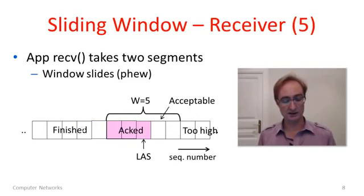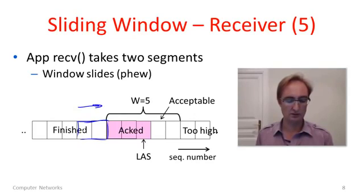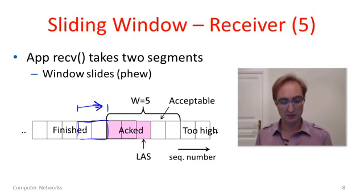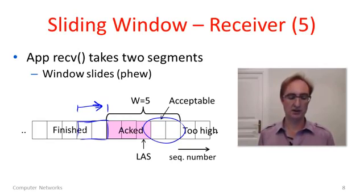But luckily for us, the app now takes two segments. They are now shown as white because their data is being passed up to the app. So this means we can slide the window along from its left edge being here to where it is now here. And now we have another couple of buffers available for new segments coming in from the other side. Phew! That was great. Just in time. But you can see we got lucky in this scenario. And with the slow receiver we could easily get unlucky.